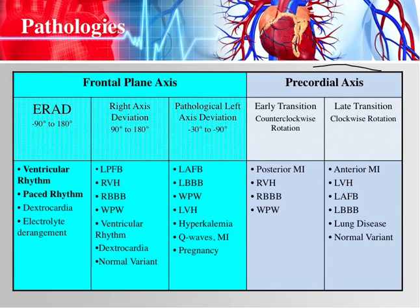And then you have your precordial axis, which comes from leads V1 through V6. The causes of different axis transitions I'm going to talk about later on. But I just want you to get an idea that it's sort of important — if you want to be good at EKG interpretation, you must learn how to identify the EKG axis, know what normal is, and know what causes abnormal variances.